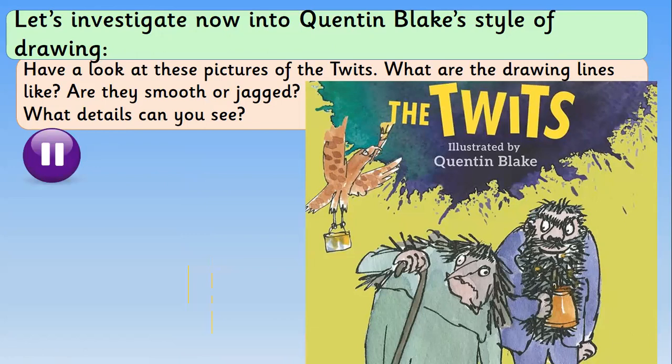Now I want you to have a look at these pictures of the Twits — Mr and Mrs Twit, two very mean characters from the story. We're looking at the illustration Quentin Blake has done. Think about the lines he's used: are they smooth or jagged? Look at their hair, their bodies — what details can you see? Think about what details Quentin Blake has used to make these characters look as mean as possible. Pause and write your ideas on your whiteboard.